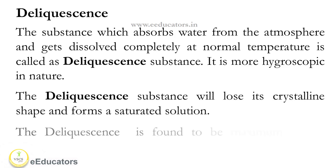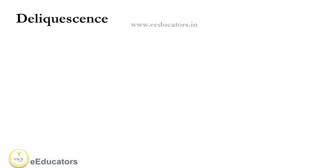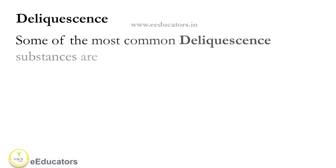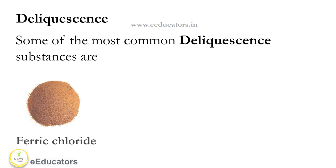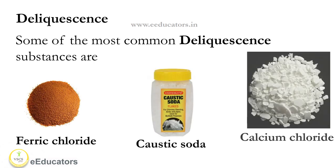Deliquescence is found to be maximum under conditions of low temperature and a humid atmosphere. Some of the most common deliquescent substances are ferric chloride, caustic soda, and calcium chloride.